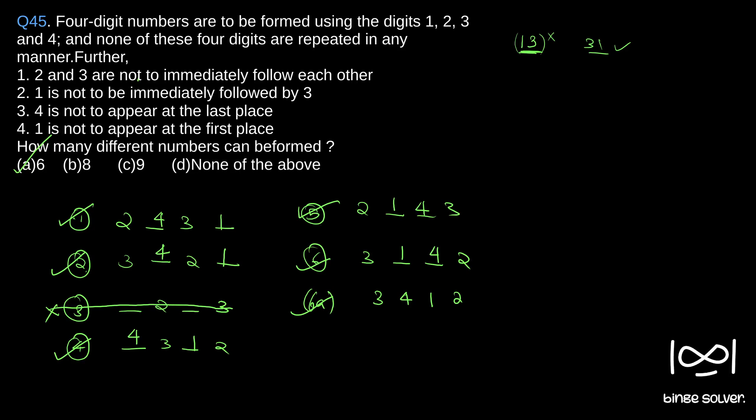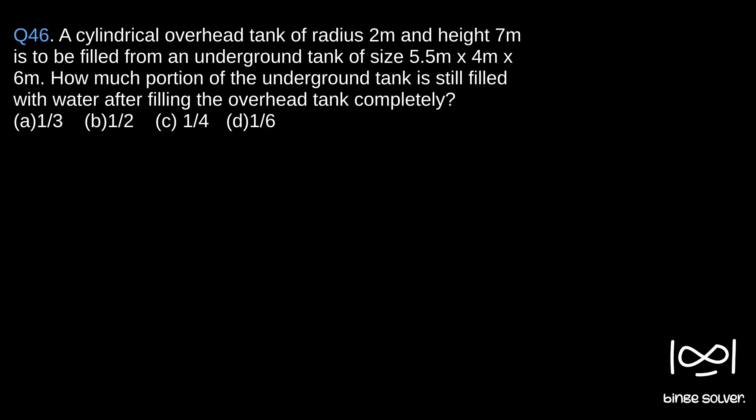Next question, Question 46. A cylindrical overhead tank of radius 2 meters and height 7 meters is to be filled from an underground tank of size 5.5m × 4m × 6m. How much portion of the underground tank is still filled with water after filling the overhead tank completely? We have two tanks here, so let's draw these two tanks.